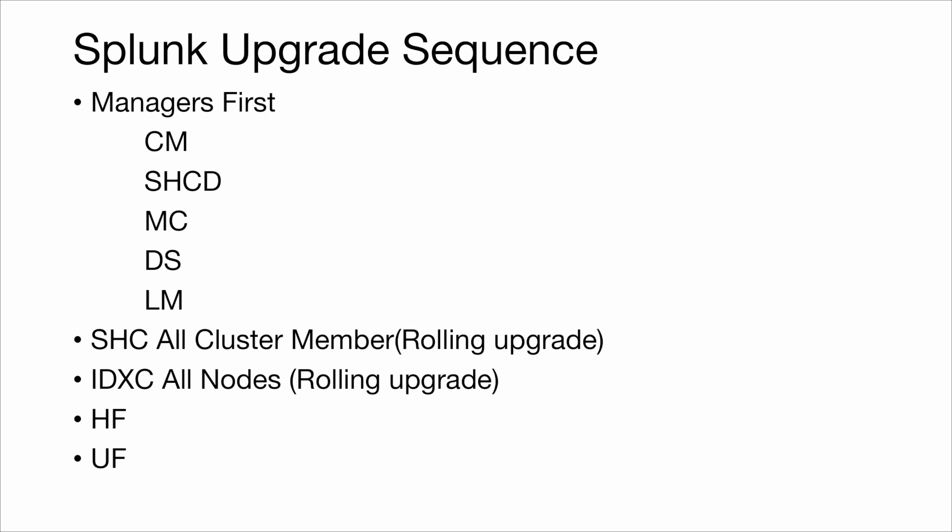Then the Heavy Forwarder and Universal Forwarder — these are optional in the upgrade process, but it is better to upgrade all the Heavy Forwarders and Universal Forwarders. To summarize: managers first, all five managers, then Search Head Cluster, then Index Cluster, then Heavy Forwarder and Universal Forwarder.